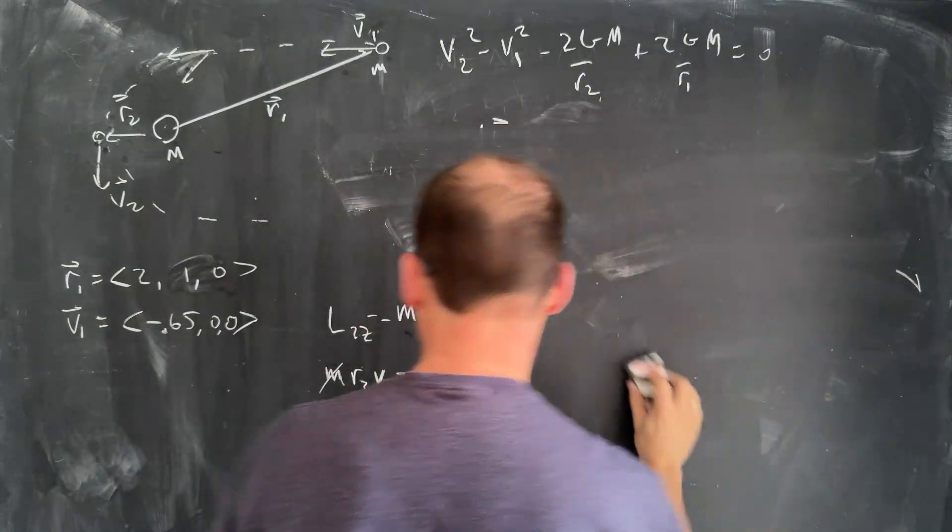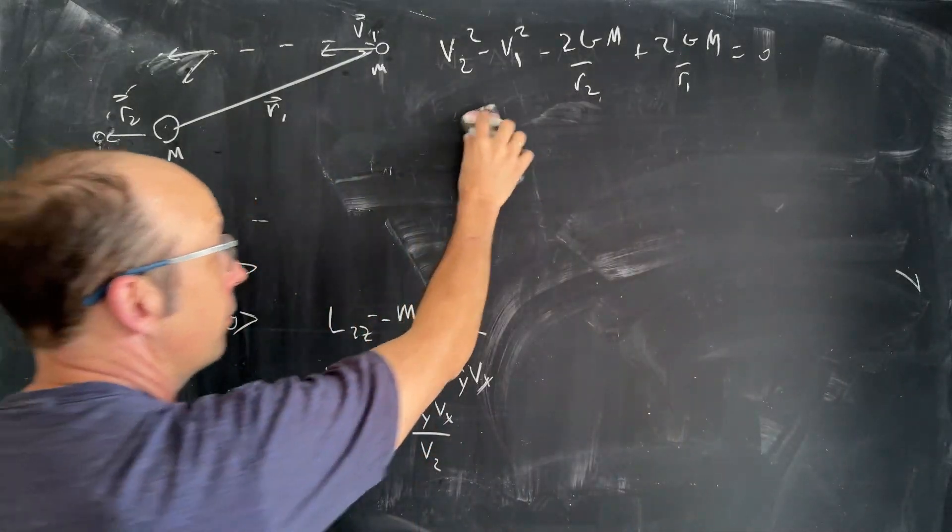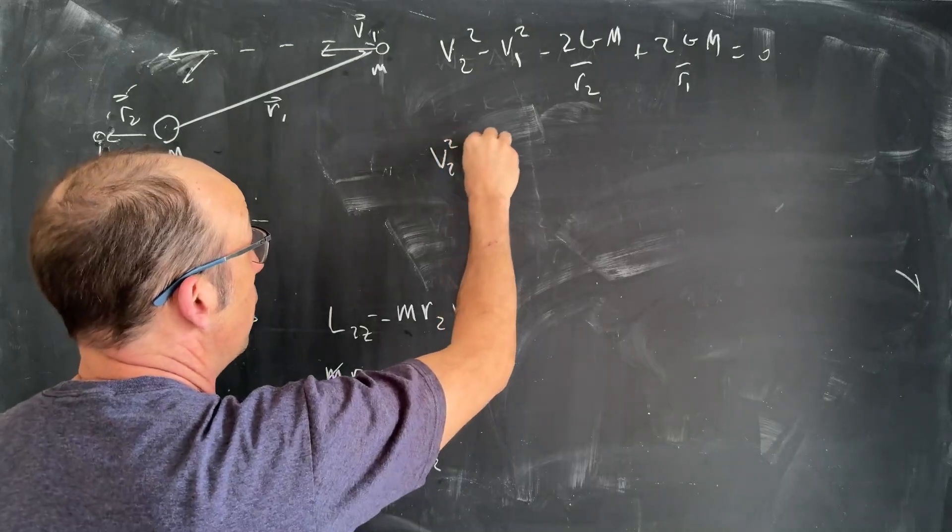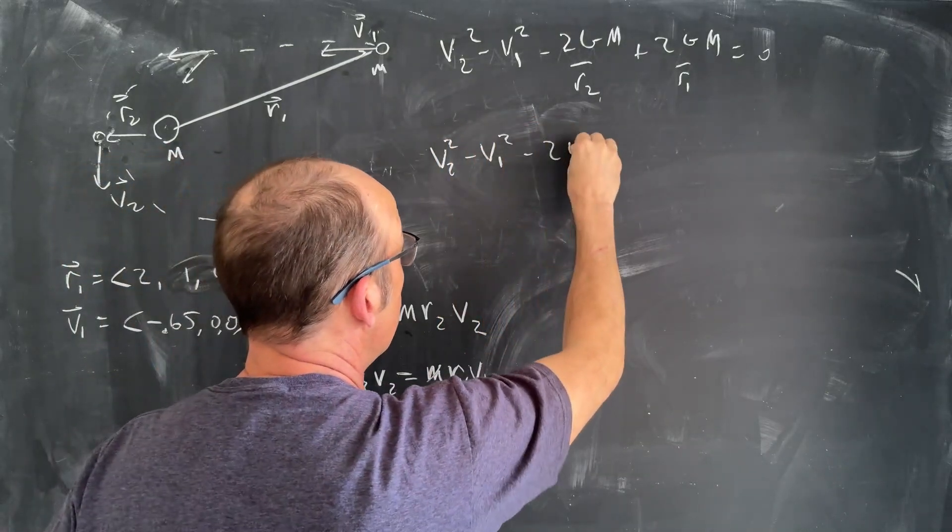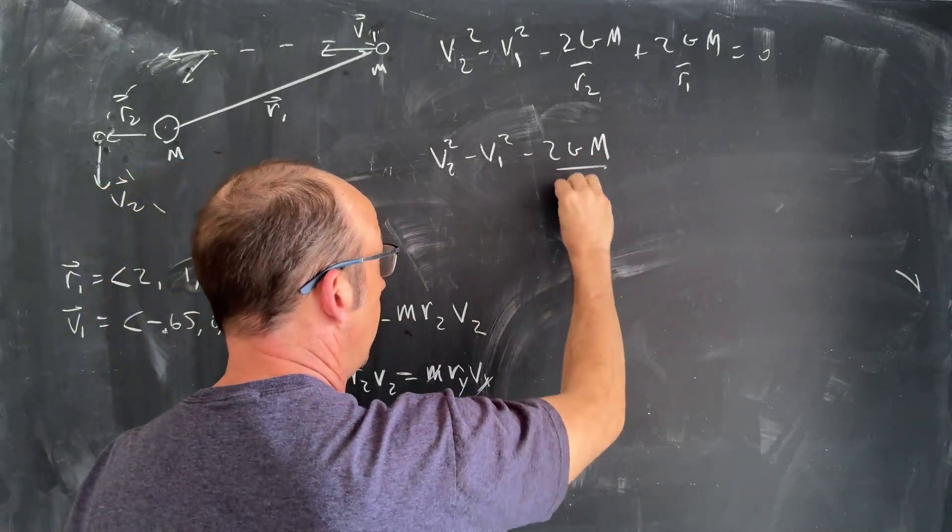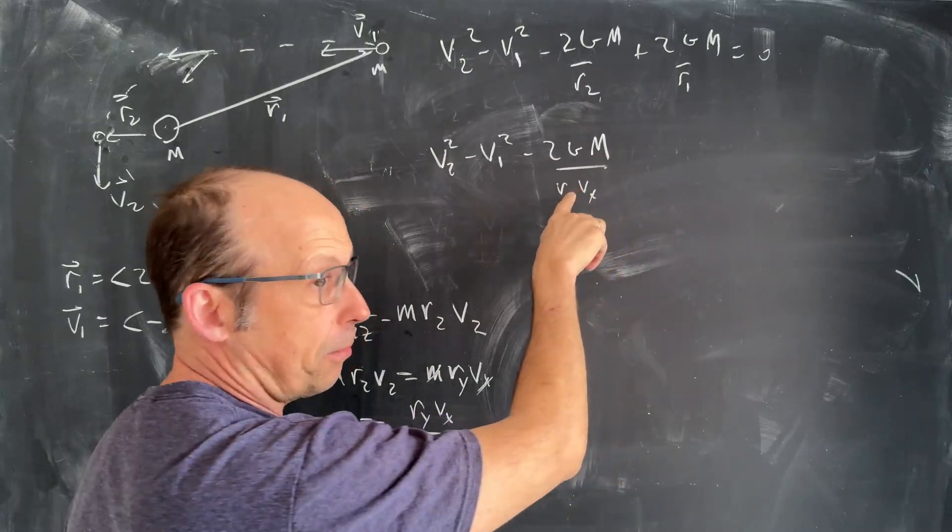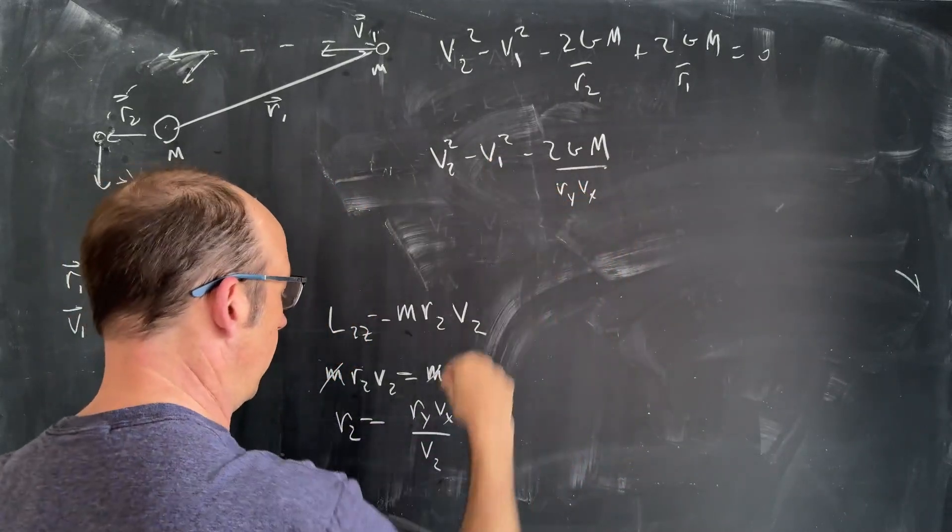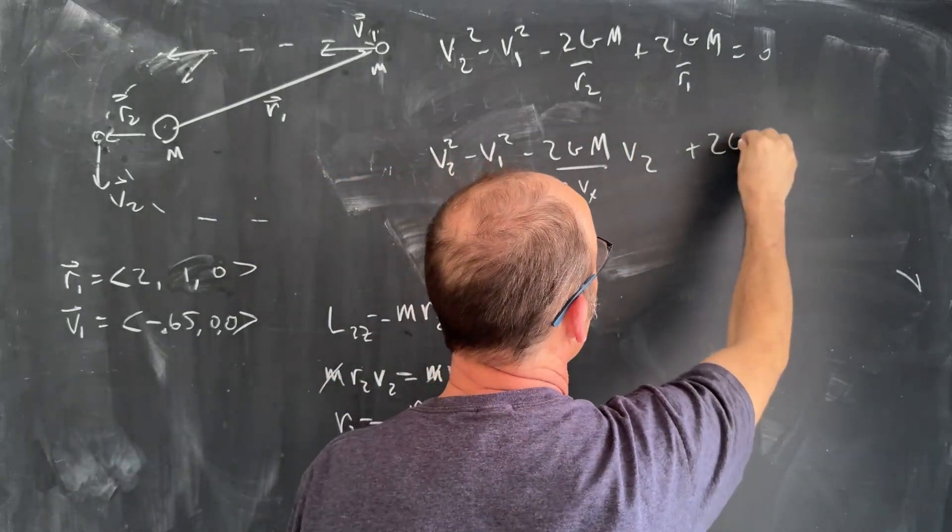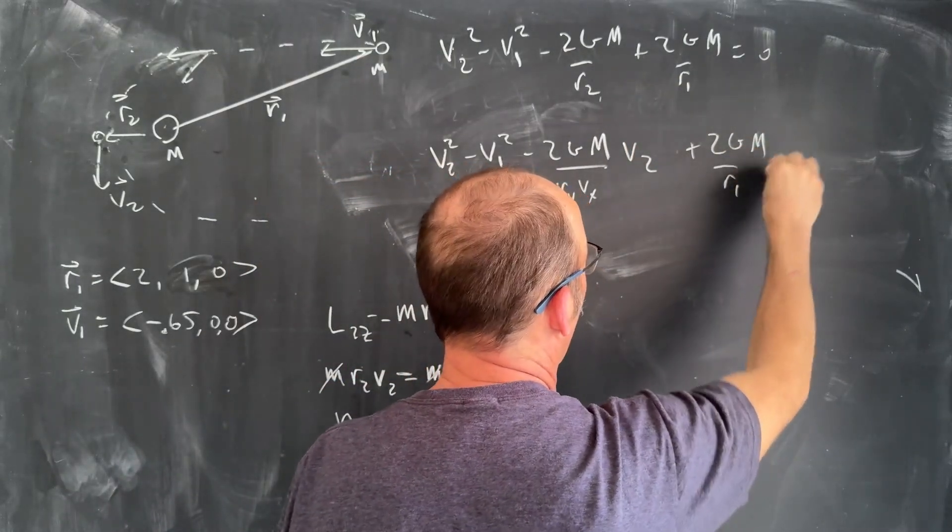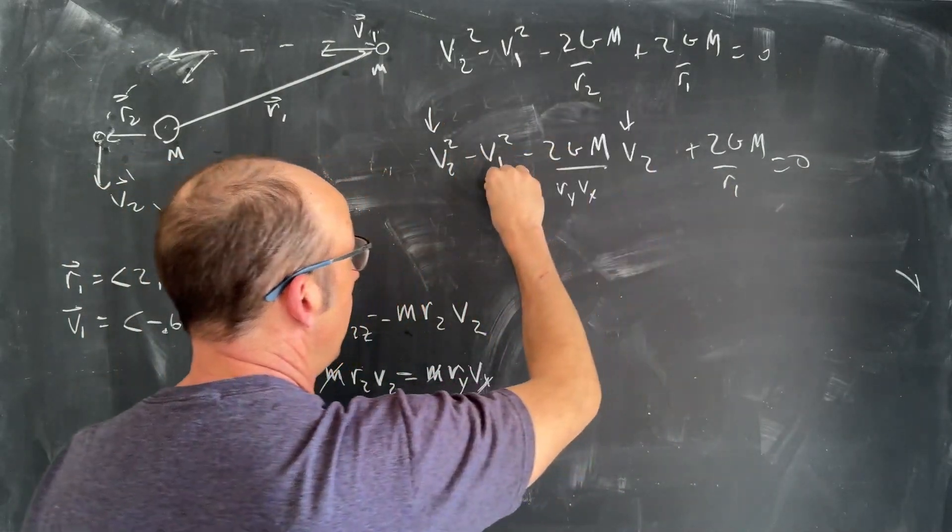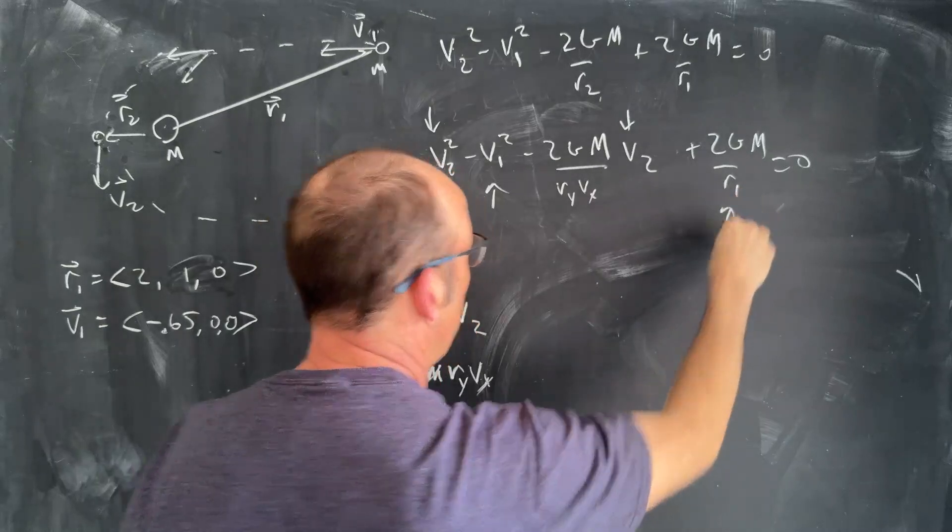Now, up here, I can substitute that in for this R2, and I'll get an expression with just V2 in there. And I won't have two equations with two unknowns. So my second equation is that, and I'm substituting it into this. So if I do that, I get the following equation. V2 squared minus V1 squared minus 2Gm divided by R2, so it's going to be divided by R_y V_x over V2, and that's 0.65. That's not negative, right?